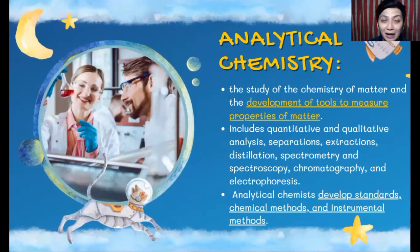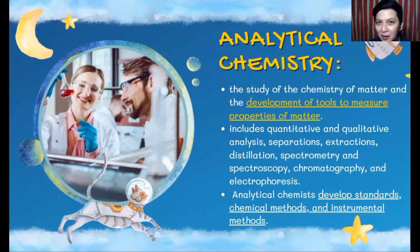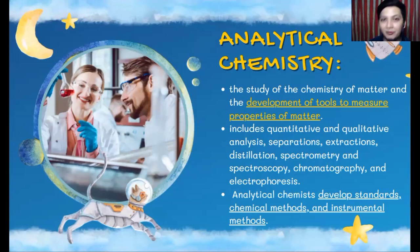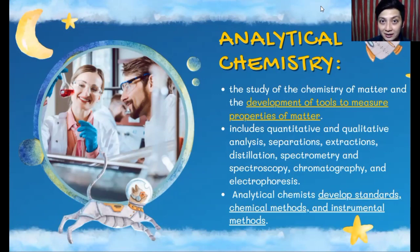These are the important factors that deal with analytical chemistry — it's like you are going to use your critical thinking in this branch of chemistry. Analytical chemists develop standards, chemical methods, and instrumental methods when dealing with different substances or materials. It's like you need to have a procedure and specific strategies to analyze a certain object.